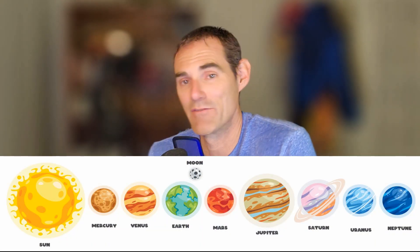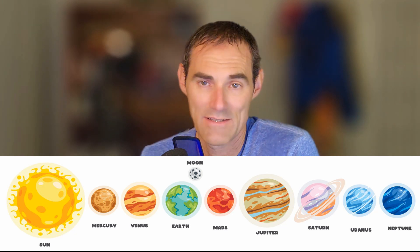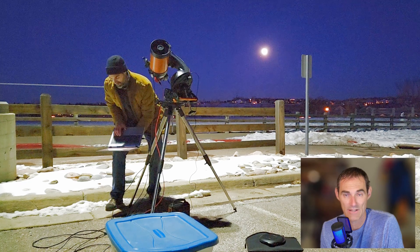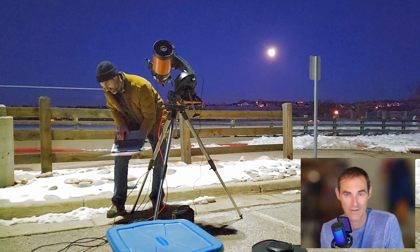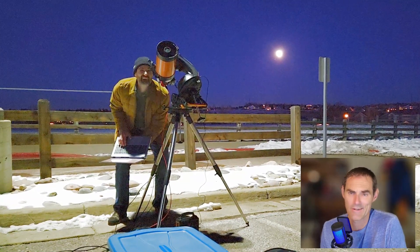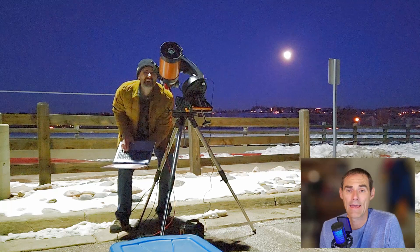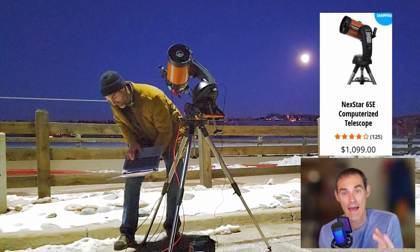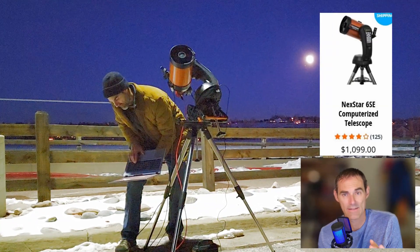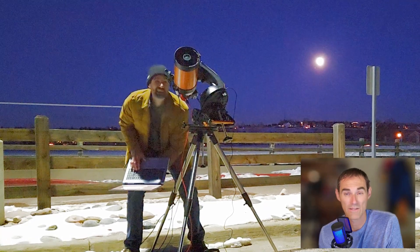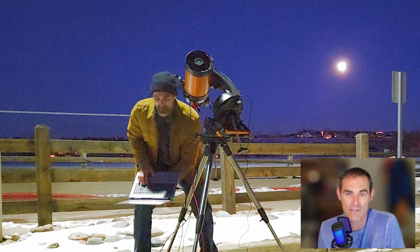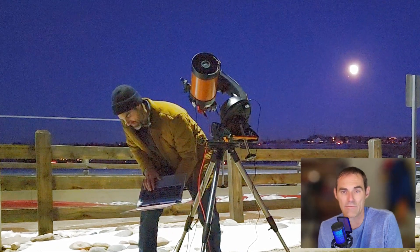So what I'm going to show you here is a sampling of every planet in the solar system, plus the sun and moon through my six inch reflector telescope. That six inch telescope is called the Celestron Nexstar 6SE, and it costs about $1,000. It's probably the smallest aperture size — six inch — that you would want if you are trying to get serious about planetary astrophotography or planetary viewing.